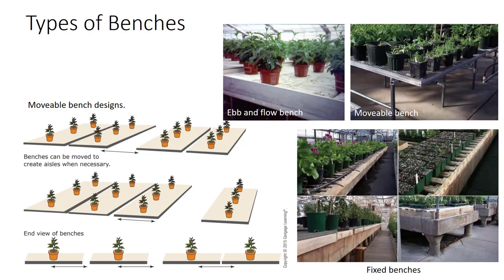Most greenhouses use raised benches in a wide range of designs and materials. The two main categories are fixed and movable benches. Fixed benches can be made from many materials and can be temporary, using cinder blocks for legs and movable bench tops, or permanent. The bench top may be wood, concrete, wire mesh, or molded plastic used for ebb and flow watering systems. The bench must have a drainage system, be approximately 3 to 6 feet wide for worker access, and allow for good air circulation.